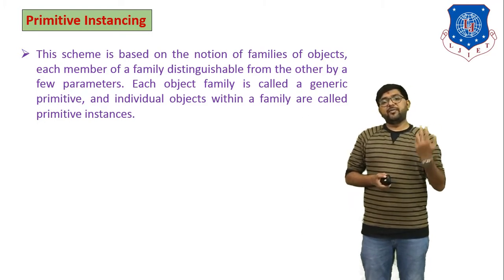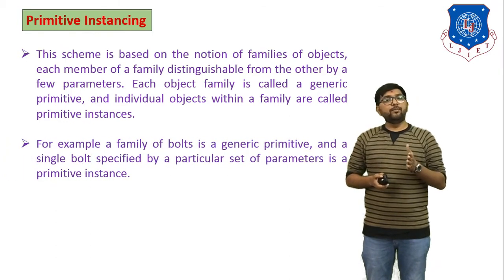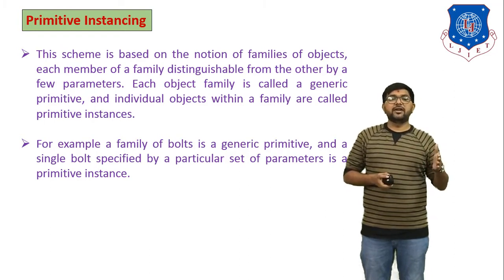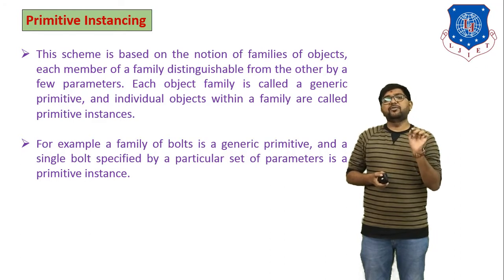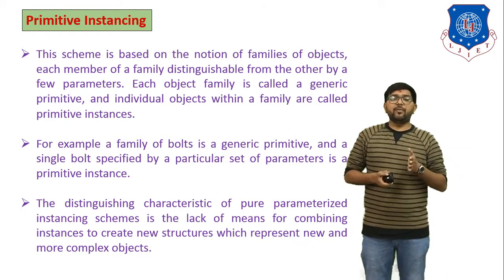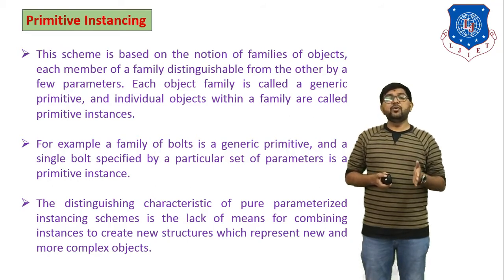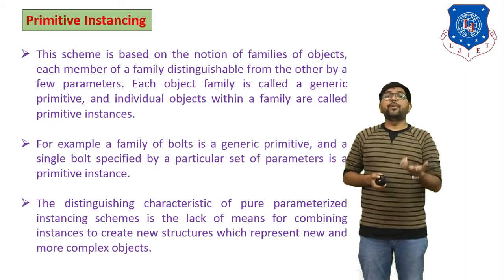For example, a family of bolts is a generic primitive, and a single bolt specified by a particular set of parameters is a primitive instance. In the generic primitive we have a number of bolts, but in the individual primitive we have just one bolt with a specific specification. The distinguishing characteristic of a pure parametric instancing scheme is the lack of means for combining instances to create new structures representing new and more complex objects. Primitive instancing is used for generating complex objects.